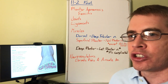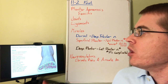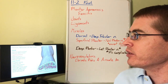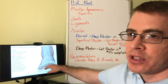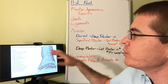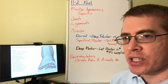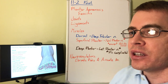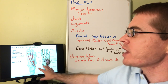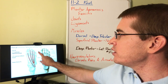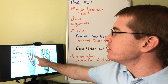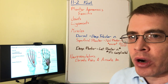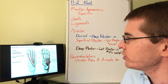Now let's talk about the musculature of the foot. Just like elsewhere, we divide this into compartments. On the foot, we have a dorsum and a plantar side. The dorsal side has the extensors — the extensors of the digits and of the hallux. These are all innervated by the deep fibular nerve coming through the anterior compartment of the leg down onto the dorsum of the foot.